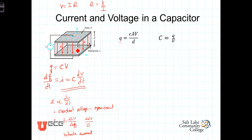You can have current changing instantaneously — you can go from no current to current flowing — but the voltage grows just like the water in a bucket grows. You can't instantaneously go from having no water to having 10 gallons of water in your bucket. That would require 10 gallons of flow in no time. So constant voltage conditions in a capacitor are like an open circuit.